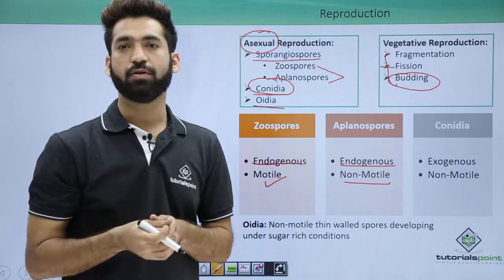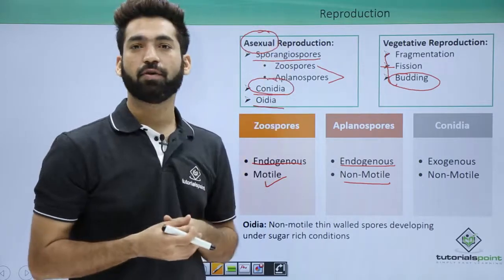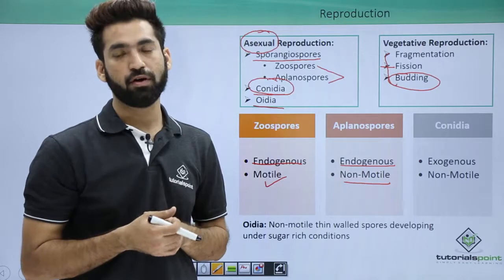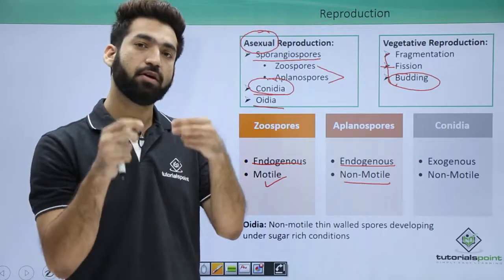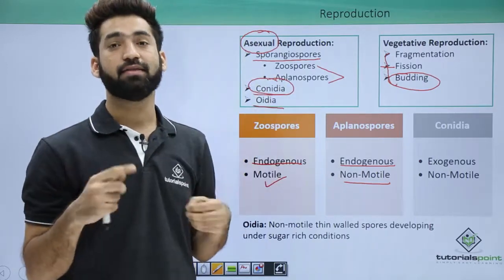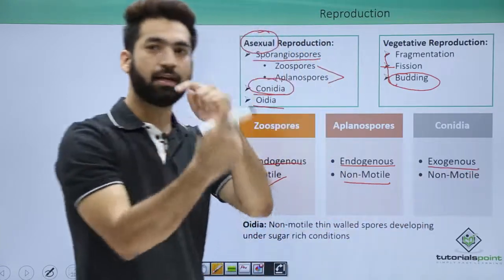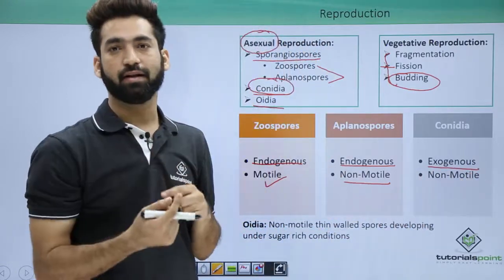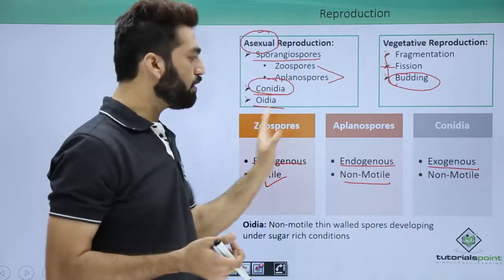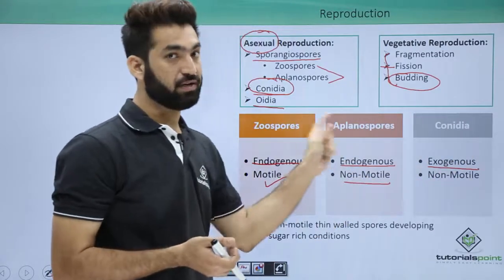When you talk about conidia, they are formed on a conidiophore, just as sporangiospores are formed on a sporangiophore. On the conidiophore, conidia come in the form of chains, and they are exogenous — they don't have anything covering or binding them.